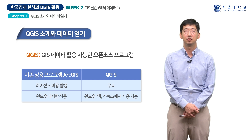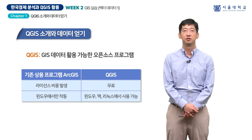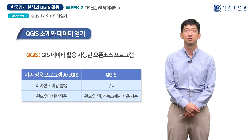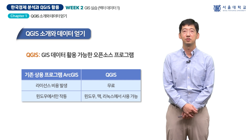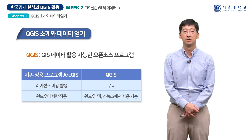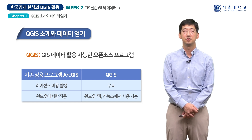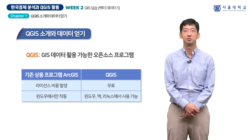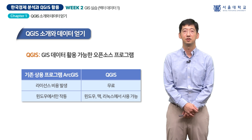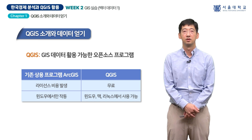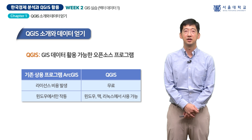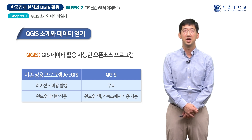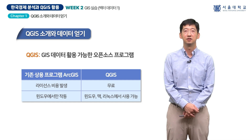QGIS를 사용하면 공간 데이터를 다루는 데 필요한 다양한 기능을 활용할 수 있습니다. 현재 QGIS는 교육기관, 연구기관, 그리고 상업적 환경 모두에서 널리 사용되고 있습니다. 또한 QGIS를 설치하는 것은 상대적으로 간단하며 공식 웹사이트에서 최신 버전의 설치 파일을 다운로드 받을 수 있습니다. 단, 무료 라이선스 소프트웨어라도 사용에 제약이 있을 수 있으므로 라이선스 약관을 반드시 확인해야 합니다.